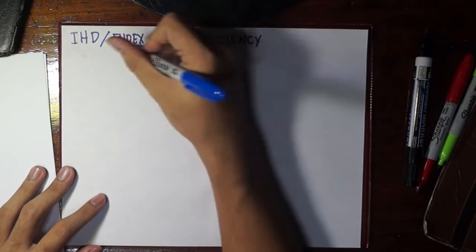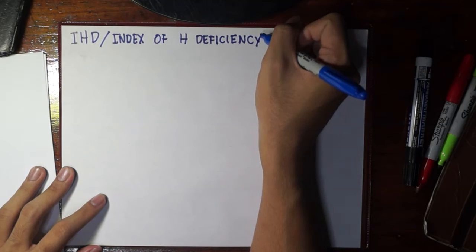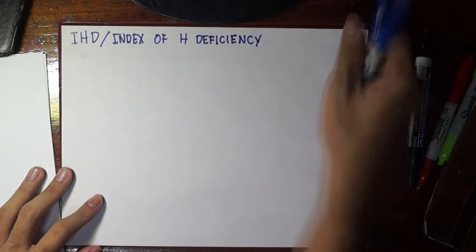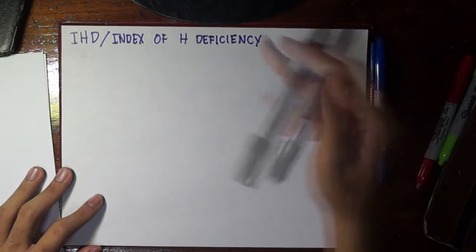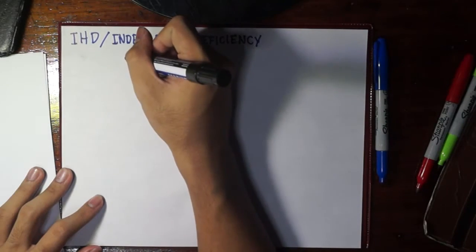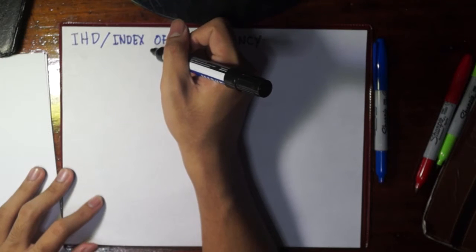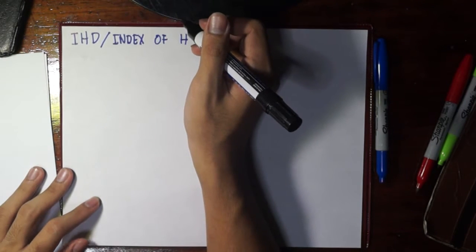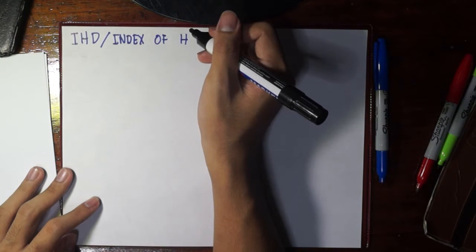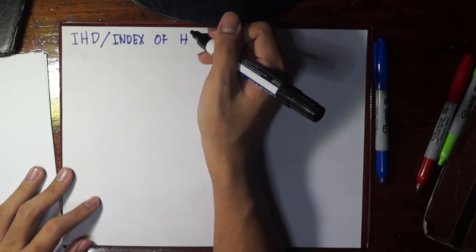As the name implies, we are calculating how much hydrogens are there in a certain compound and more specifically, how much more hydrogens should a compound have in order for it to be fully saturated.